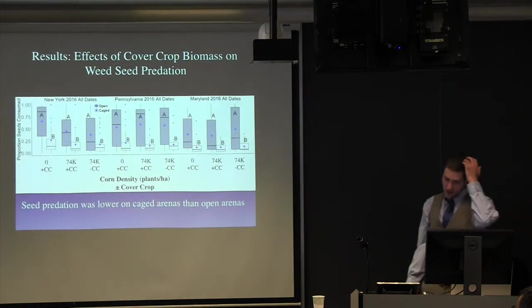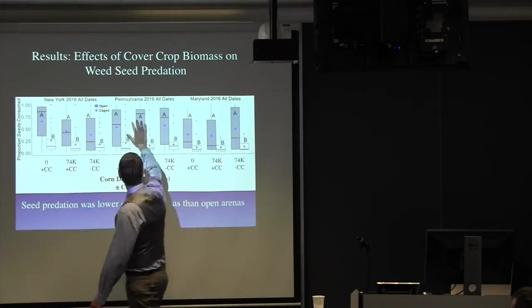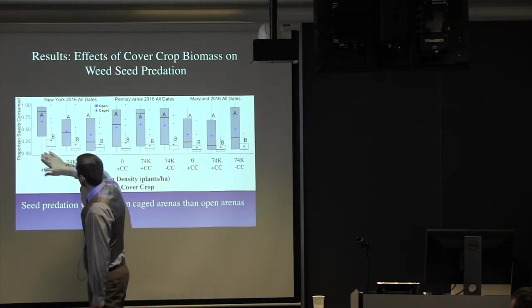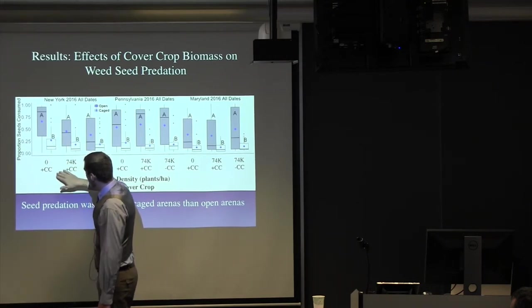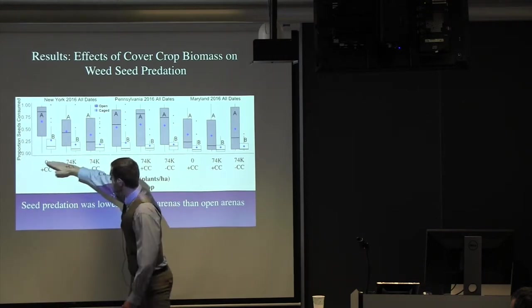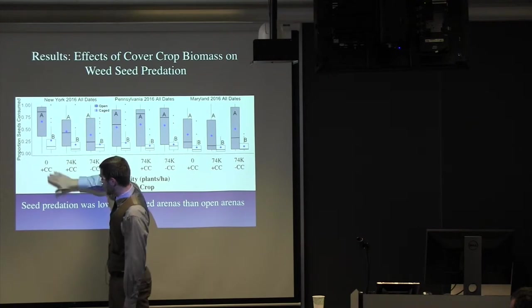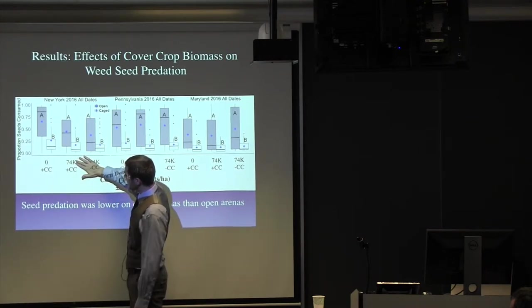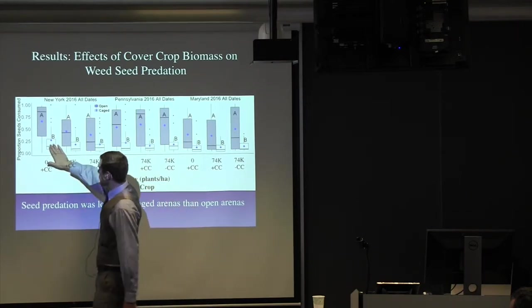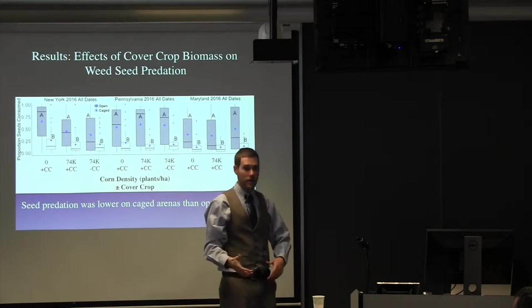But what about just looking at open versus closed? Sorry, this is very busy. New York, Pennsylvania, Maryland. And here we're looking at open arenas in gray, caged arenas in white. And the three treatments that we're looking at are the control. So this top refers to the corn density, and the bottom refers to if there was cover crop. So that's no corn with cover crop, the medium density corn with cover crop, the medium density corn without cover crop. And so we found that seed predation on the arenas that had a cage was less than the arenas that were open.